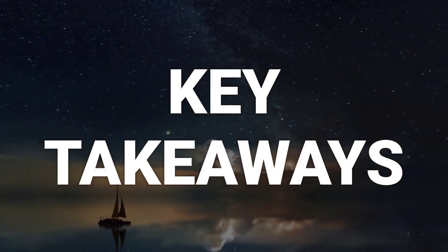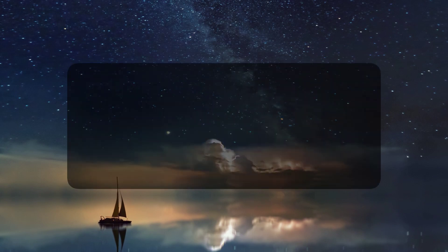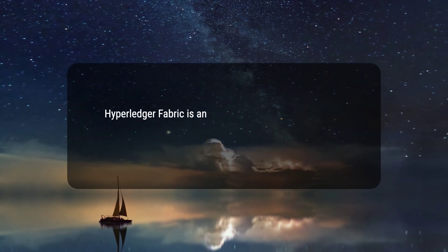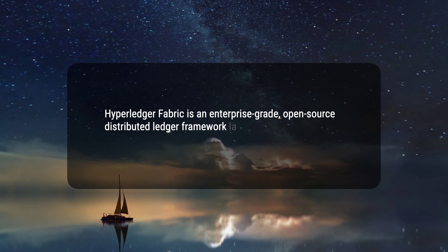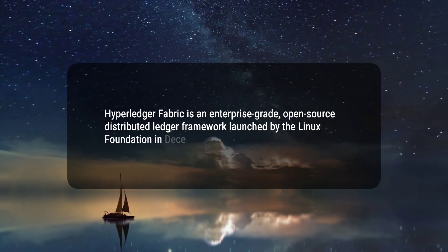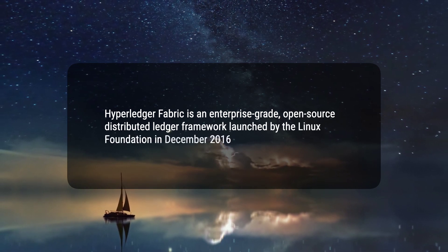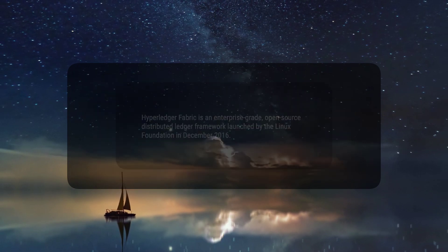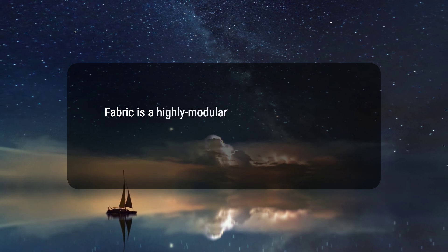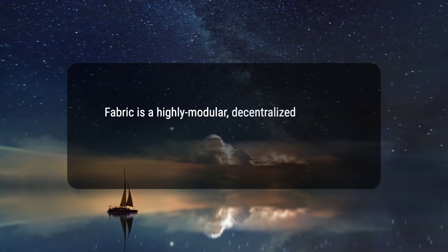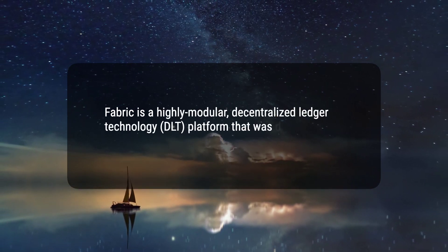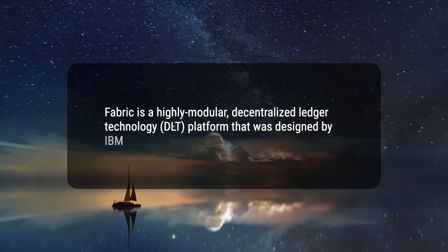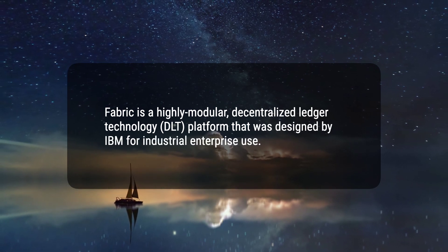Here are four key takeaways. 1. Hyperledger Fabric is an enterprise-grade, open-source distributed ledger framework launched by the Linux Foundation in December 2016. 2. Fabric is a highly modular, decentralized ledger technology (DLT) platform that was designed by IBM for industrial enterprise use.